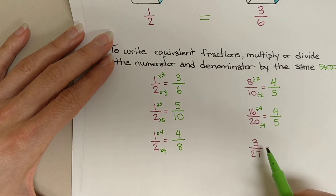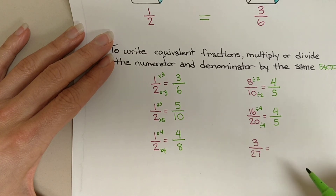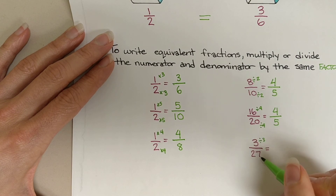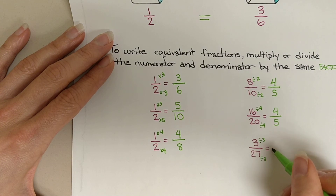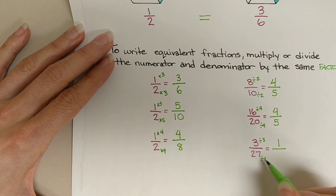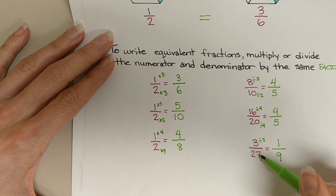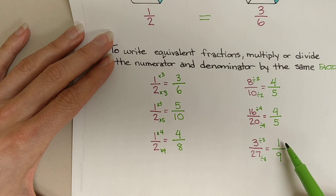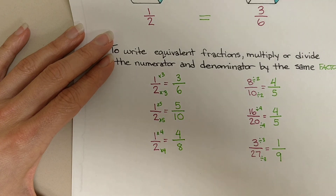Our last example: we've got three twenty-sevenths. I can divide by three. Three divided by three gives me one, and twenty-seven divided by three gives me nine. So three twenty-sevenths is equivalent to one ninth.